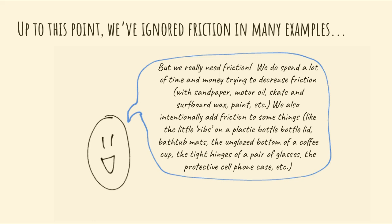In on-level physics, most of our friction problems have been horizontal because our surfaces have been horizontal. But in real life it's possible to have vertical surfaces — like when you hold a water bottle or phone. Friction is always parallel to the surface. Up to this point we've mostly ignored friction, but the reality is we need it, and we spend money and time both decreasing and increasing friction depending on the situation.